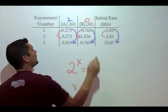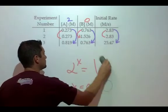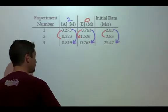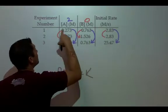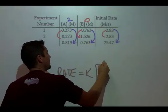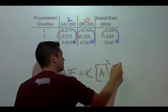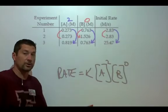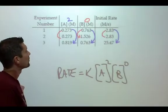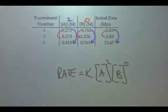So B is to the 0 order. So now I can write my rate law. Rate equals K A squared. I don't even have to put B in there. If you put B to the 0, that's fine, but I don't have to put it in. Alright, I think I have one more.